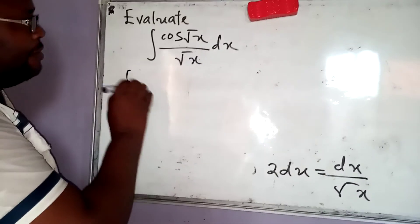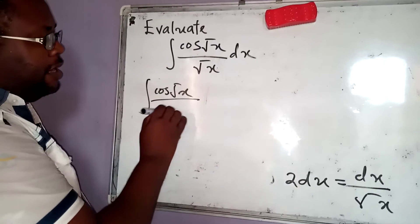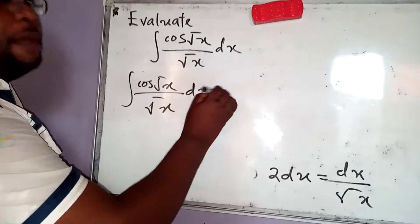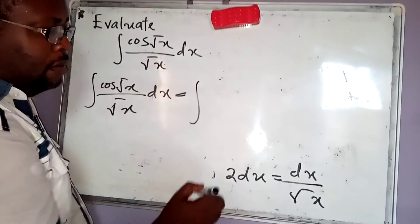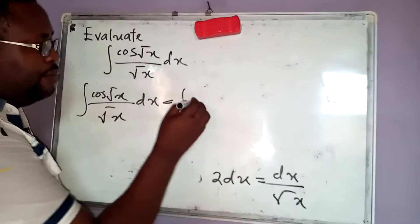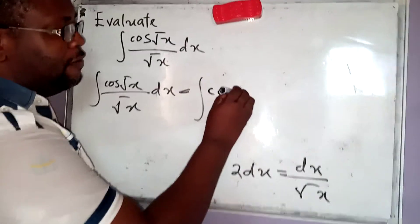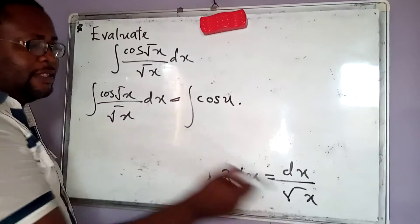It implies that the integral of cosine of root x divided by square root of x dx simply becomes equal to, I'm going to have integral. Now, we took this root x to be u. So we are simply going to have integral of cosine u multiplied by, now dx by root x is still on the board, it's the same thing as 2 du.